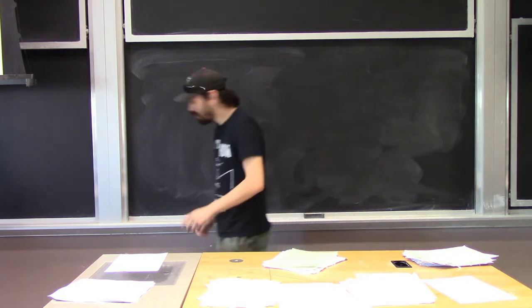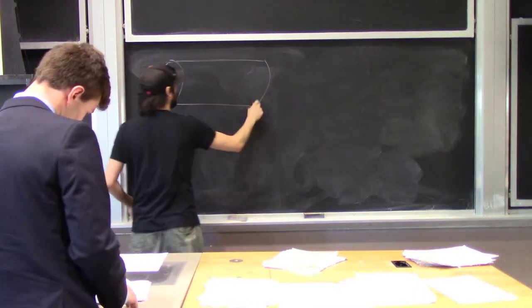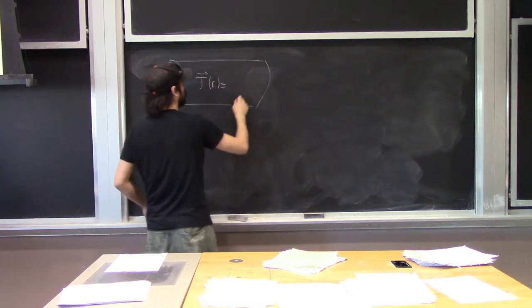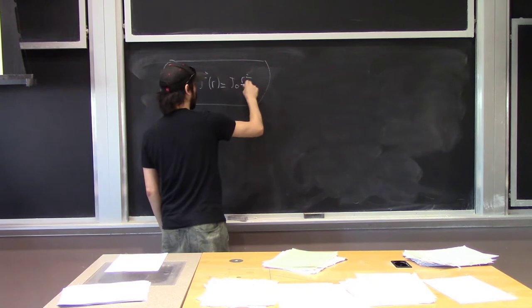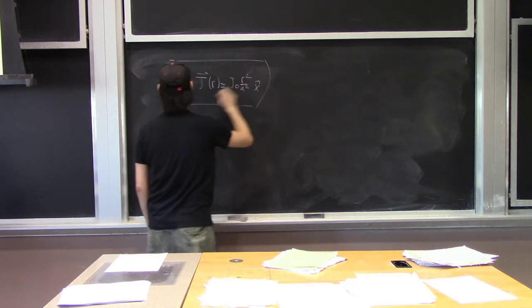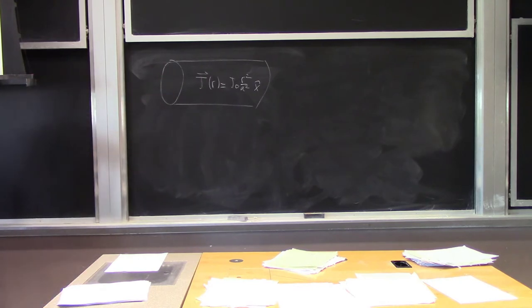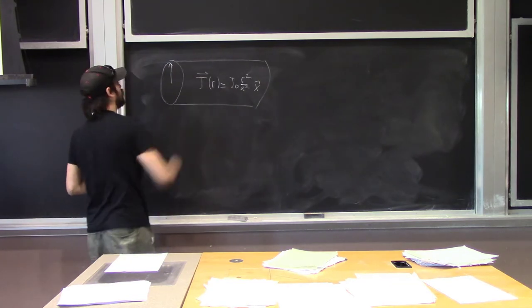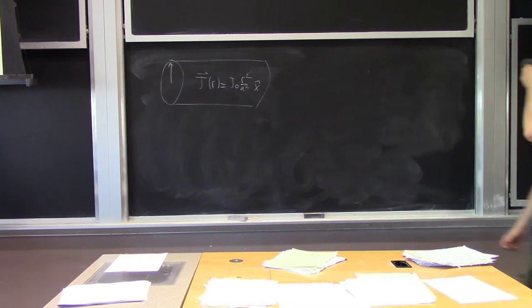The question from class yesterday said that you had some current density J as a function of R, which is going to be equal to J₀R² divided by A² in the x-hat direction. This might have been hollow on the inside or not, but all that changes is the lower bound of the limits of integration. The key thing I wanted to talk about is how you do these problems when your current density is varying with the radius.